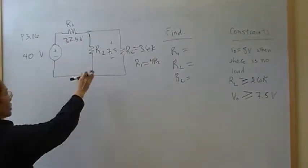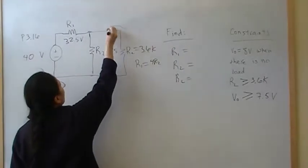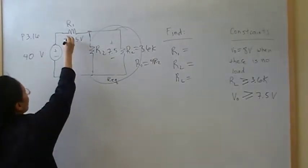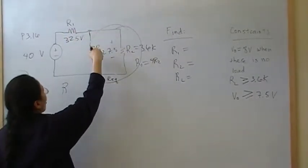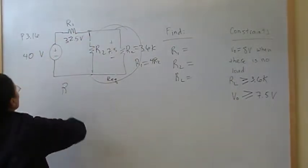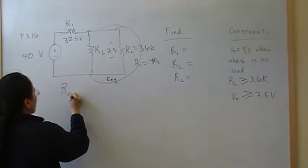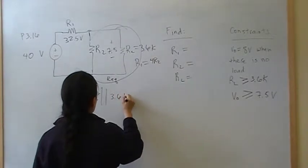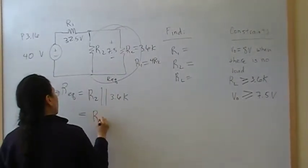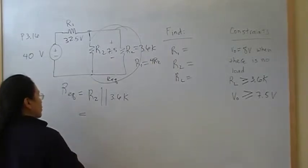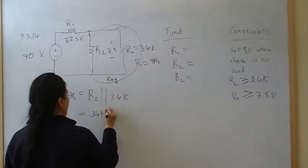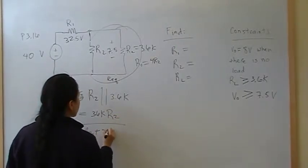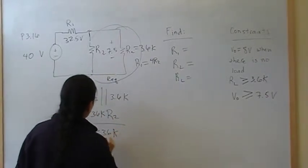Okay. So now let's find the equivalent resistance, R_EQ. So what I'm finding right now is this right here, R_EQ. And I need that because I need to find this proportion as a proportion of the total 40 volts. So R_EQ gives me R2 in parallel with 3.6K. And that's equal to 3.6K R2 over R2 plus 3.6K. That's R_EQ.